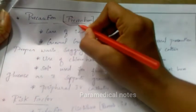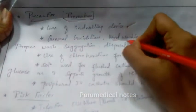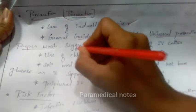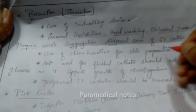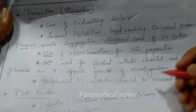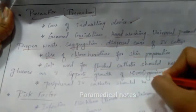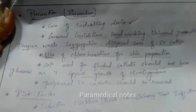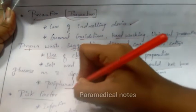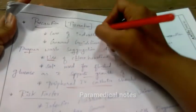The next point is prevention — that means precautions for IV catheter bloodstream infection. First, care of the injecting device and general guidelines: hand washing and universal precautions should be properly followed, along with waste segregation. Use chlorhexidine for skin preparation. The solution used for flushing the catheter should not contain glucose, as it supports the growth of microorganisms. Peripheral IV catheters should be removed appropriately.